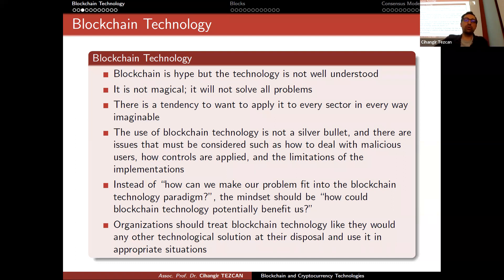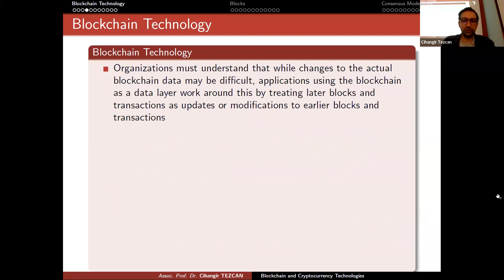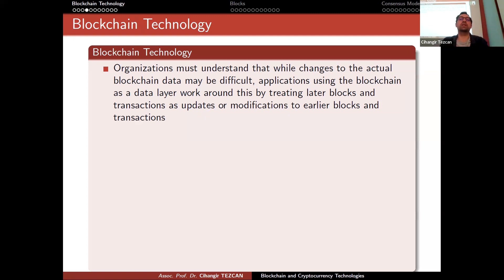Blockchain technology is somewhat similar — you have to be careful about where and why to use it. You should know the idea behind it, the limitations, and how to control it. Organizations must understand that while changes to the actual blockchain may be difficult, applications using the blockchain as a data layer work around this by treating later blocks and transactions as updates or modifications to earlier ones. No transaction can be changed — once you send Bitcoin to somebody, that transaction stays there, but a new transaction is created to transfer the rights of that Bitcoin to somebody else.